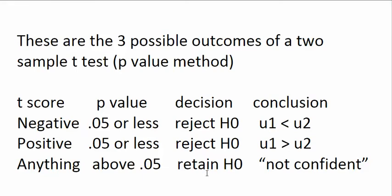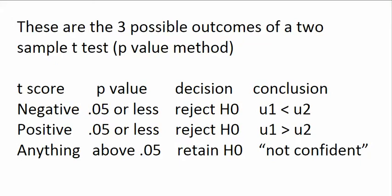In the p-value method we have the same three areas as with the critical value method: the negative rejection region, the non-rejection region, and the positive rejection region — each leading to its own conclusion. The p-value tells you if your t-score is in one of the rejection regions. If p is 0.05 or less, your t-score is in a rejection region; negative t means the negative rejection region, positive t means the positive rejection region. If p is above 0.05, you're in the non-rejection region. This way you can do a two-sample t-test without having to look up the critical value.